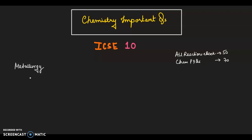I will start with metallurgy. You have to do all the named reactions in this chapter. You will get Bayer's process where bauxite is converted to alumina, then we have Hall-Héroult's process.